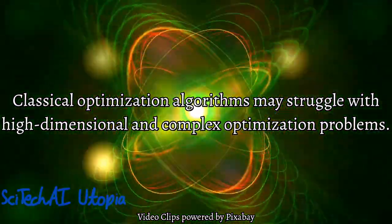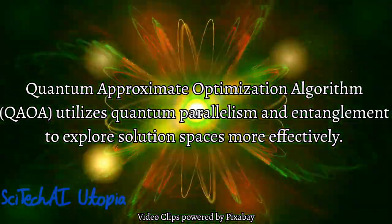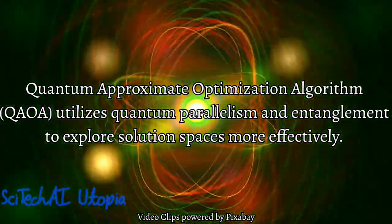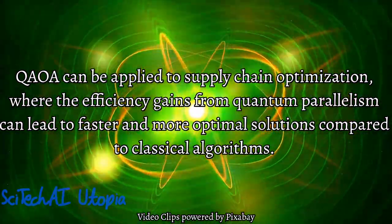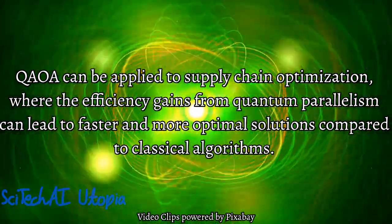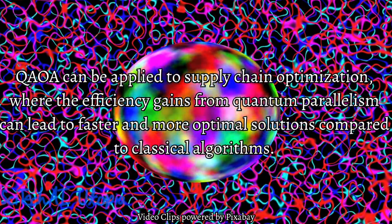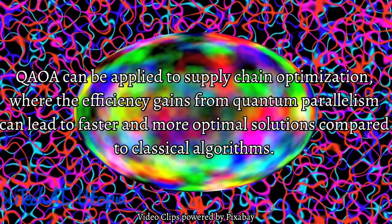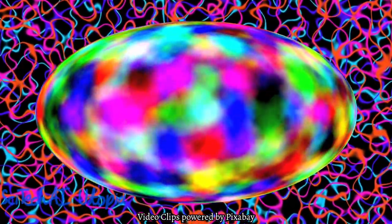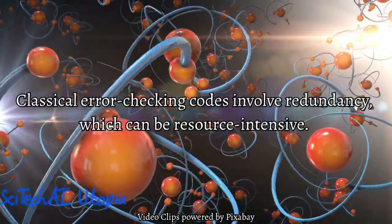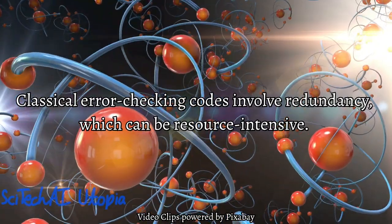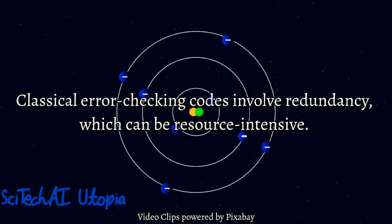Number 11: Improved Optimization. Classical optimization algorithms face challenges when dealing with complex, high-dimensional optimization problems, often requiring significant computational resources and struggling to find global optima efficiently. Quantum computers offer improved optimization capabilities through algorithms like the quantum approximate optimization algorithm, which leverages quantum parallelism and entanglement to explore solution spaces more effectively, providing potential speedup in solving optimization problems. This quantum advantage is particularly evident in applications like supply chain optimization.